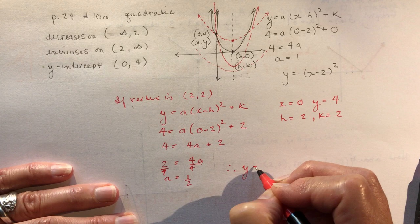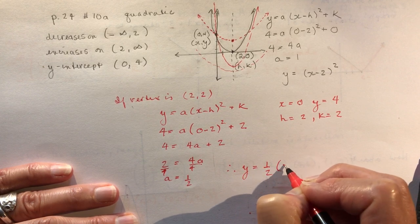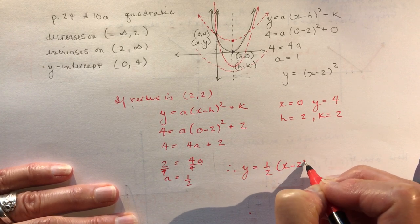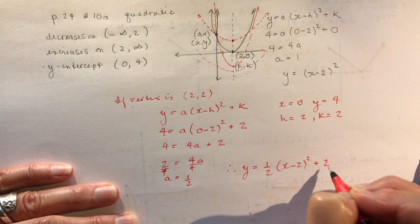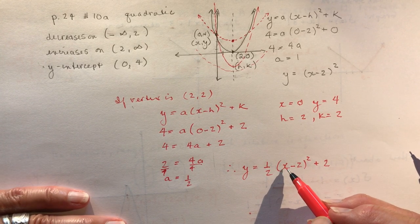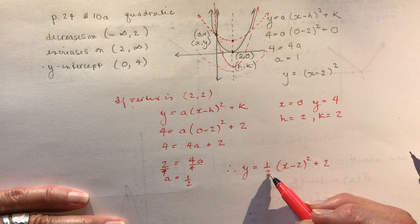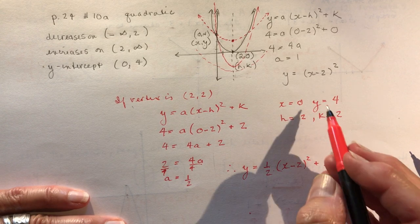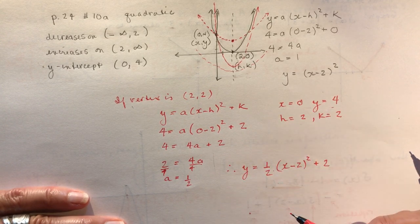So then I would have y is equal to 1/2(x minus 2) squared plus 2. That would also be another equation. So if you check, you plug in x is 0. You would have 4 divided by 2 is 2 plus 2 is 4. And that gives us back to the x and y values.